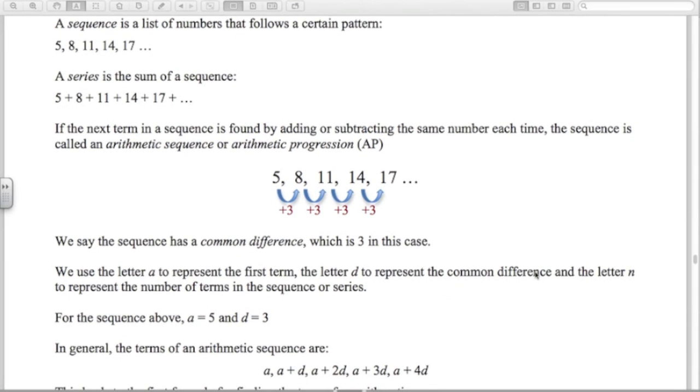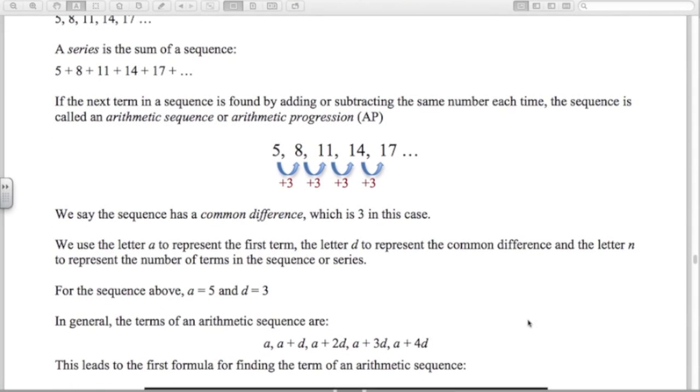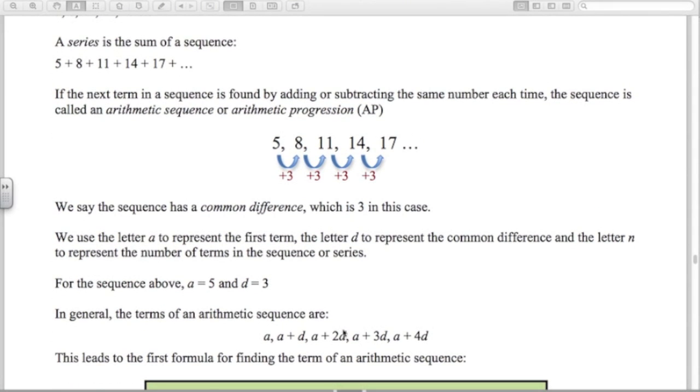In general, for the terms of an arithmetic sequence, we've got the first term A, the next term is A plus D, the next term is A plus 2D, A plus 3D, A plus 4D, etc. You can see in these sequences the 5th term has A plus 4D.